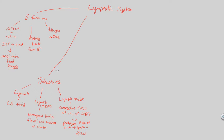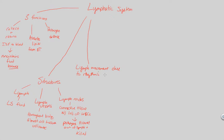Now let's look at how the lymphatic system really works. Lymph is fluid moving throughout the body, so lymph movement must occur. Just like blood movement, there has to be some pumping mechanism. However, there is no heart or central organ causing lymph pressure. Instead, lymph movement is due to rhythmic contractions — specifically rhythmic muscle contractions of the vessel walls.